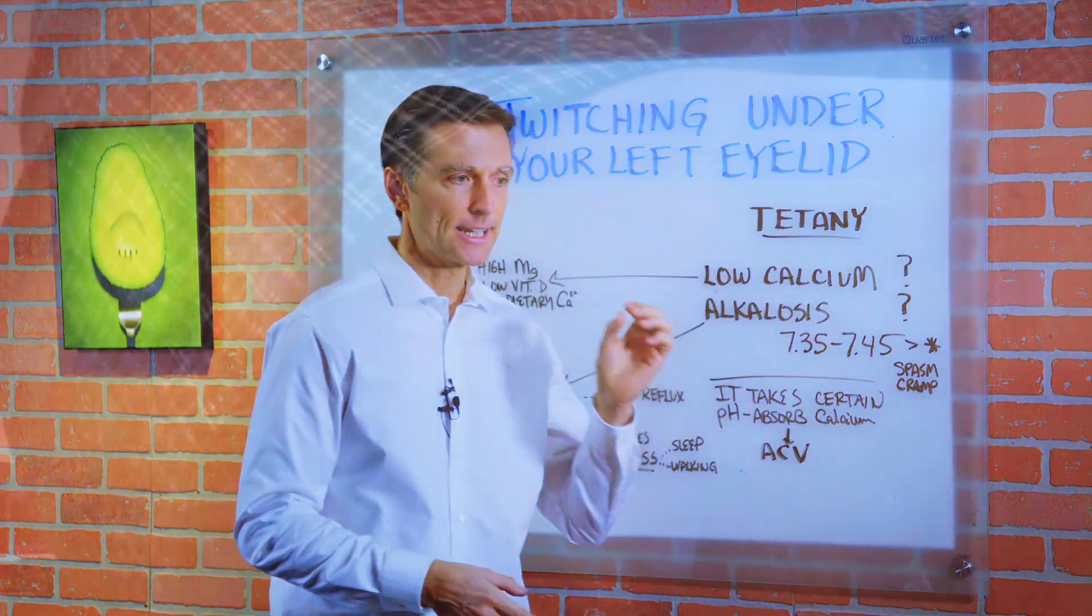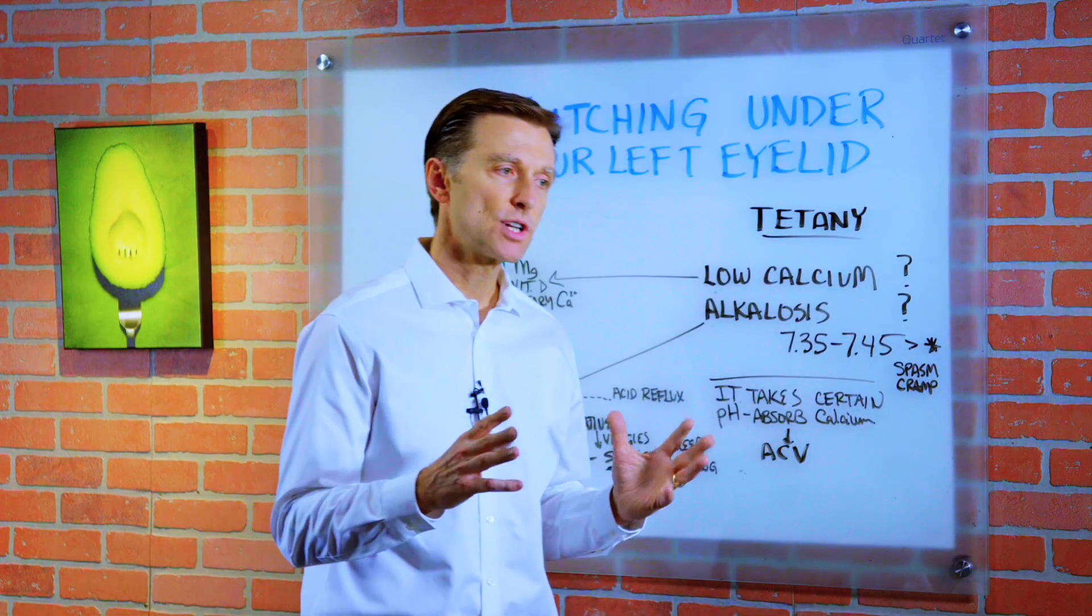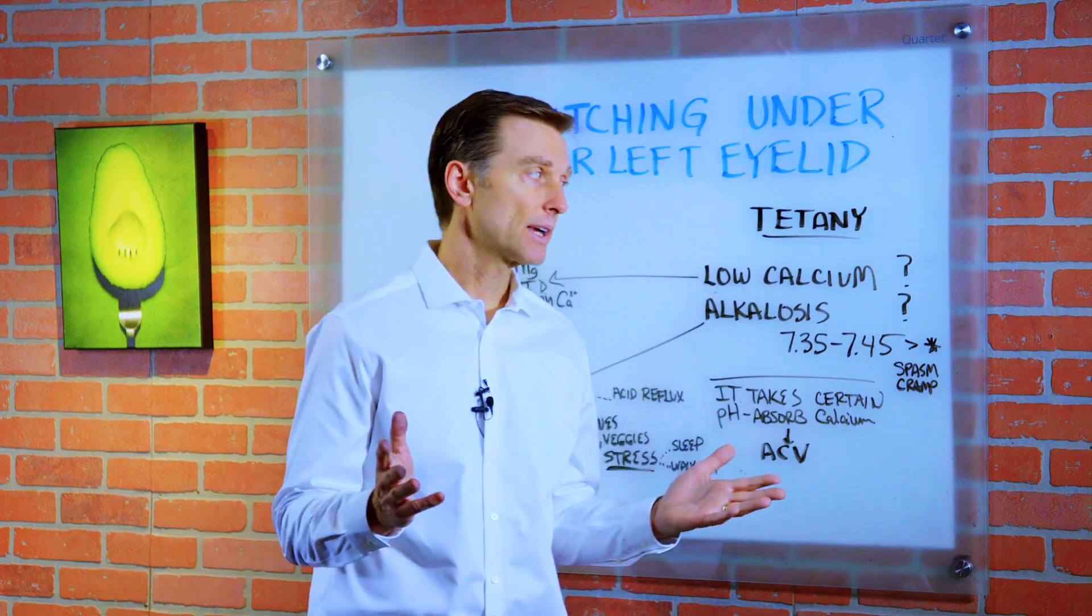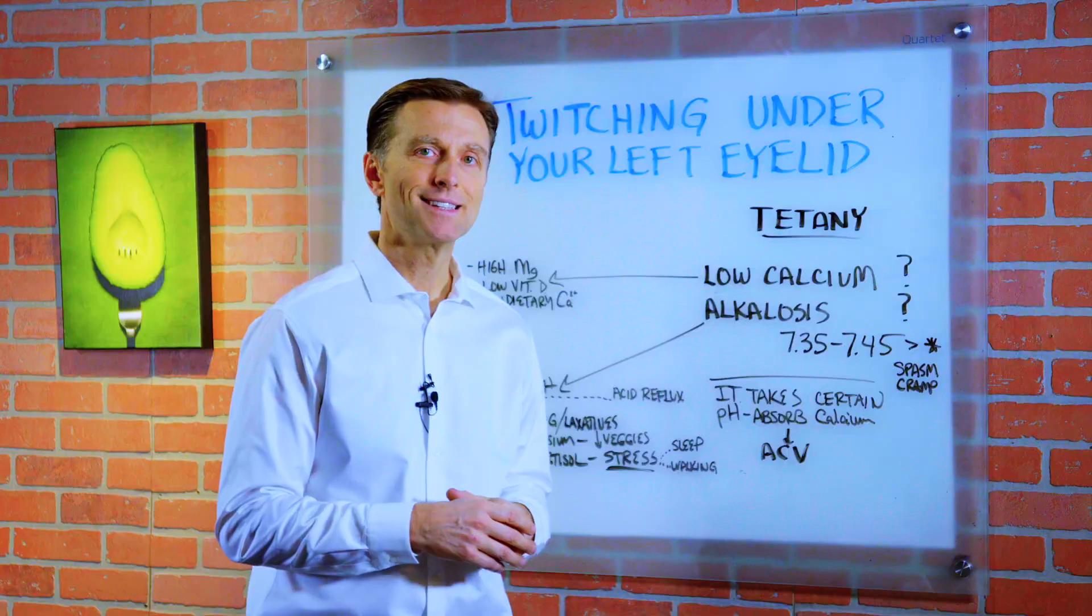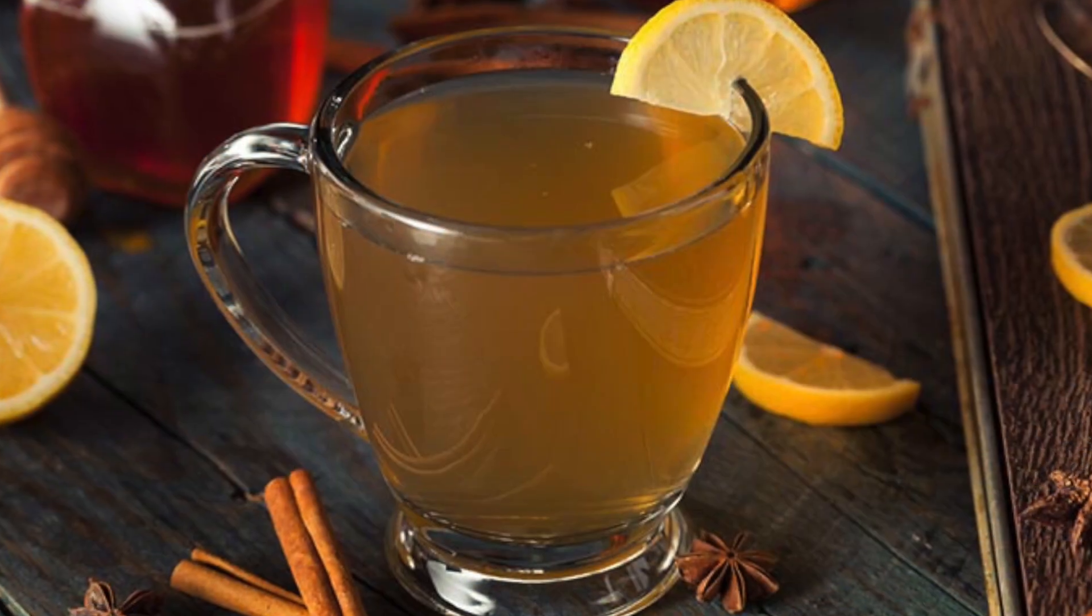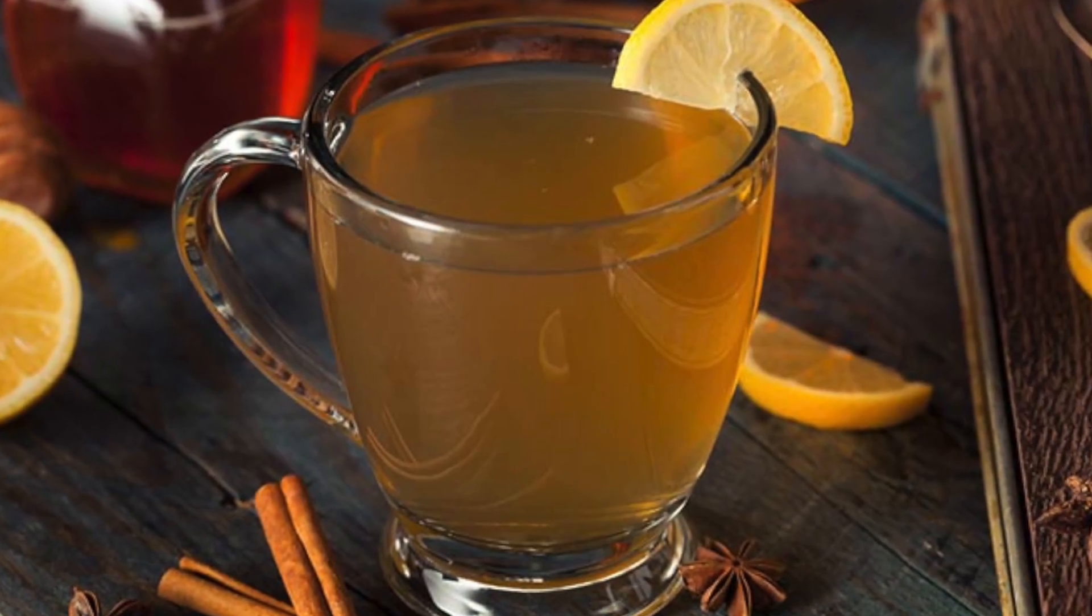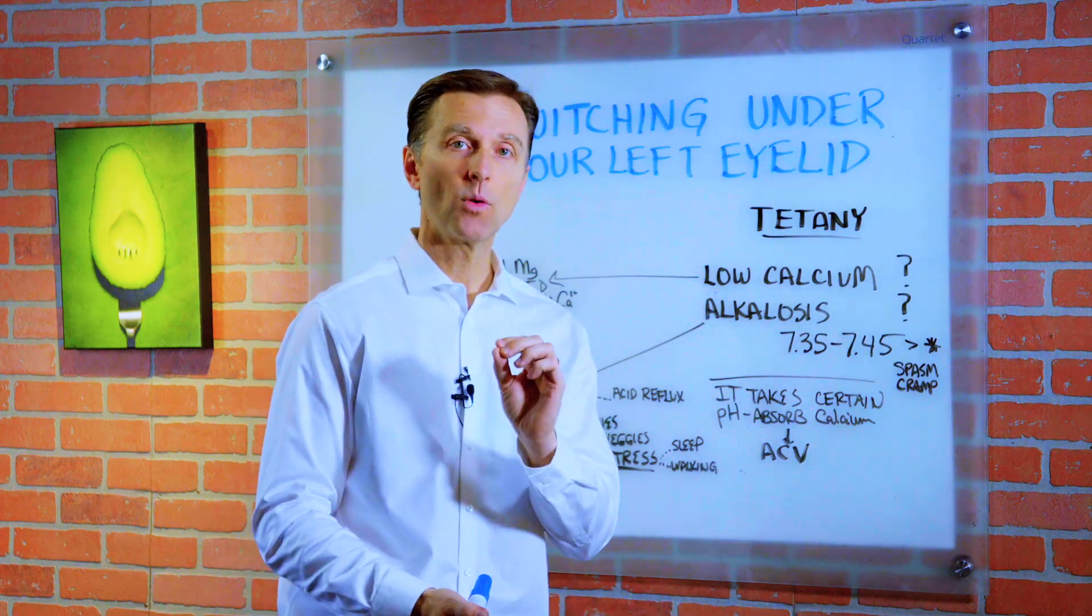This is called tetany. It's an excitable nerve where the nerve is twitching. Now, if you do a search on this, you'll see a lot of people are getting rid of this condition by just taking apple cider vinegar. So I'm going to explain why that works and why sometimes it will not work.